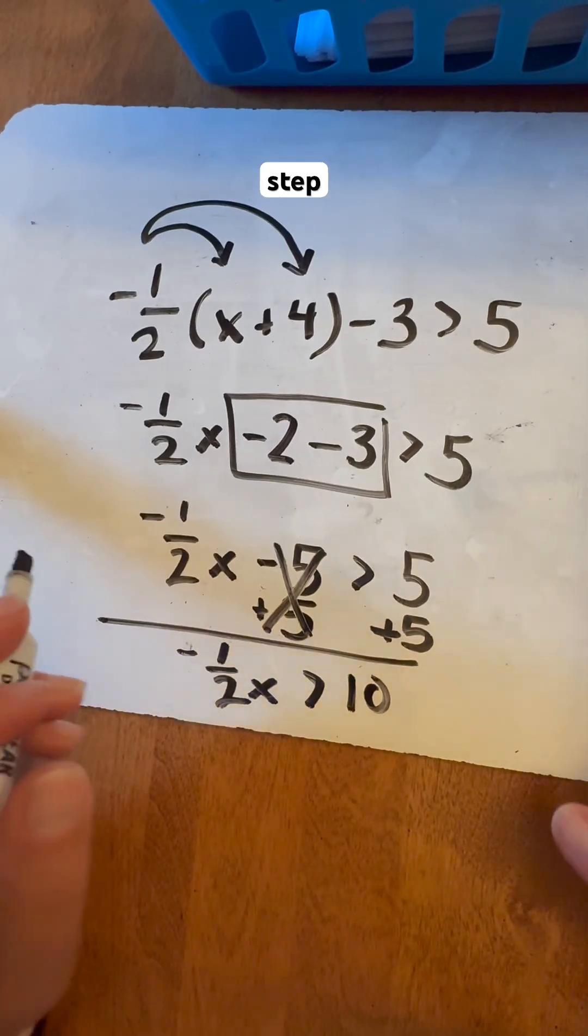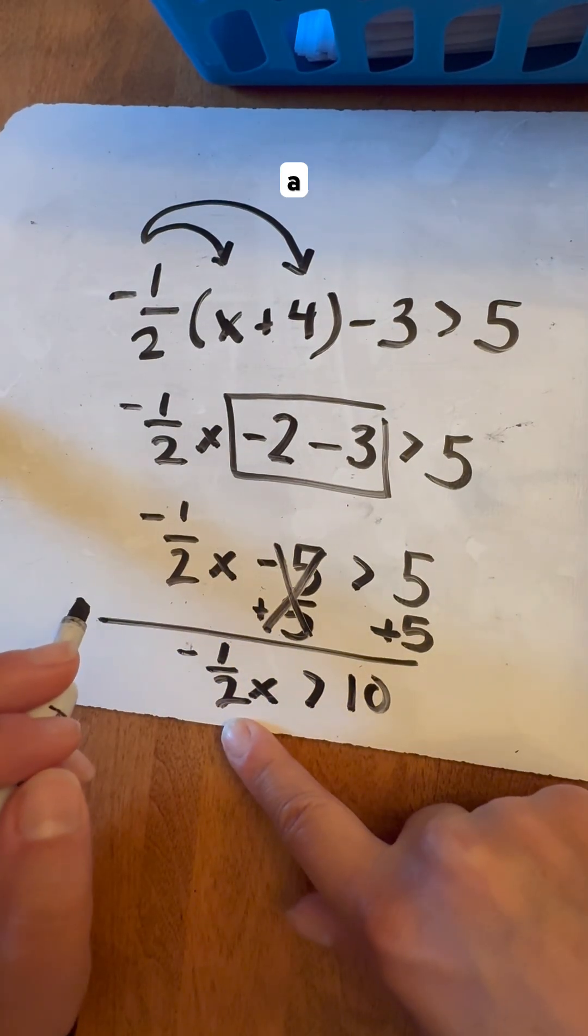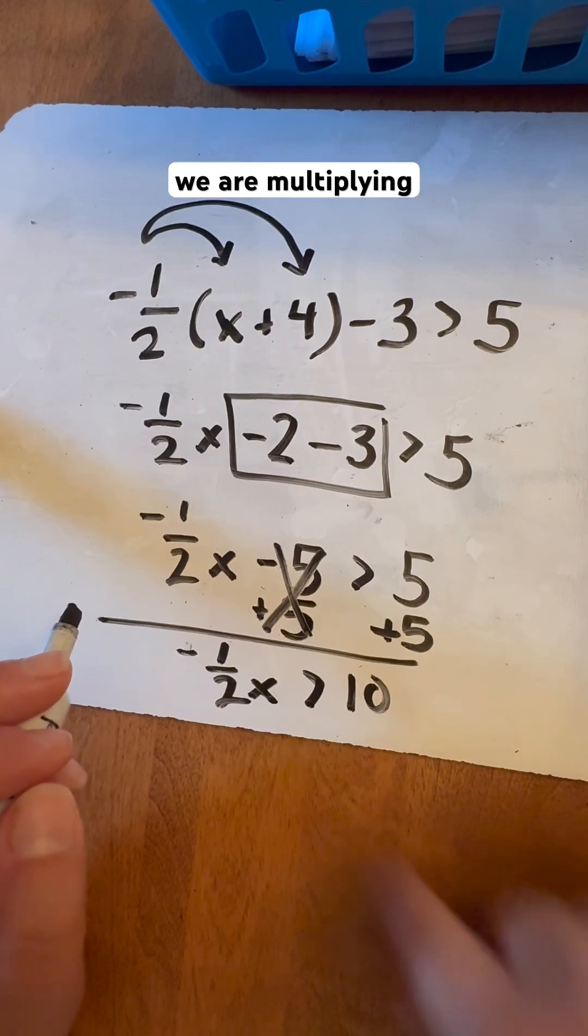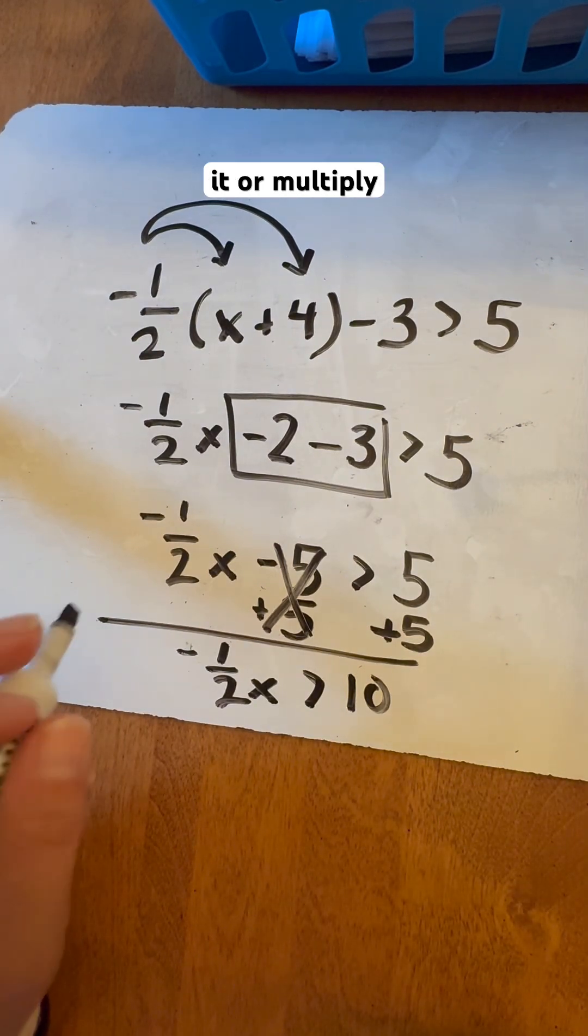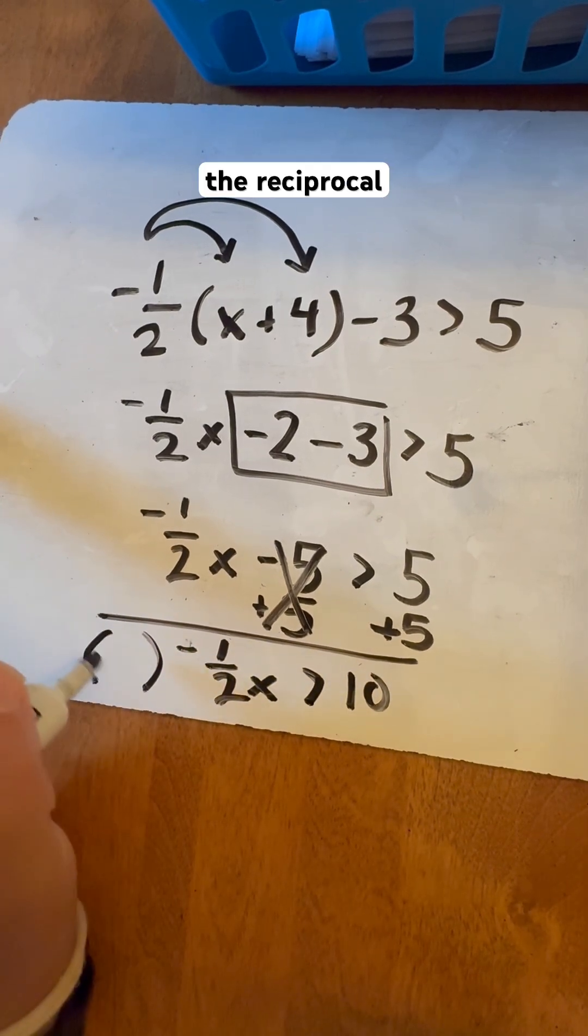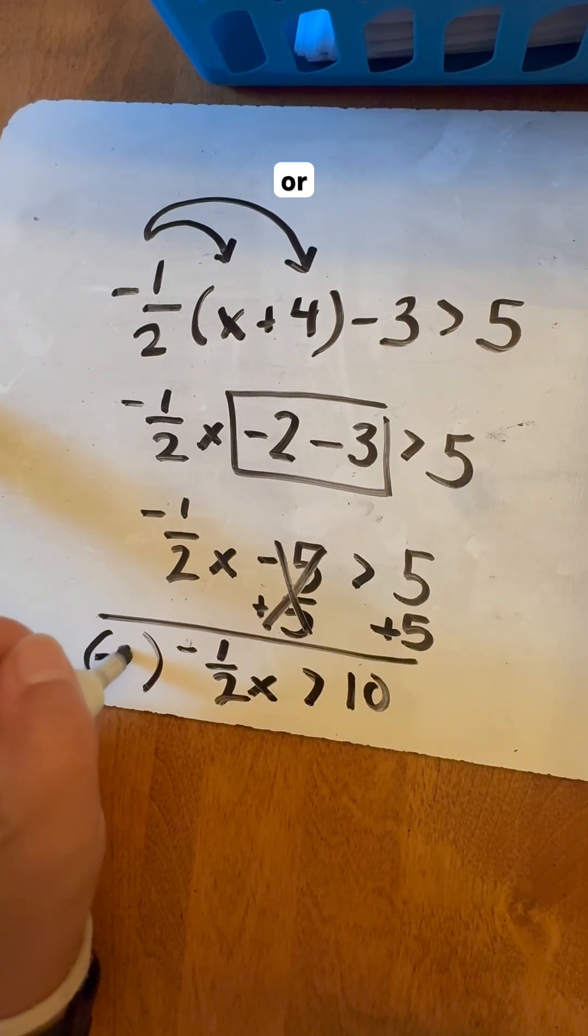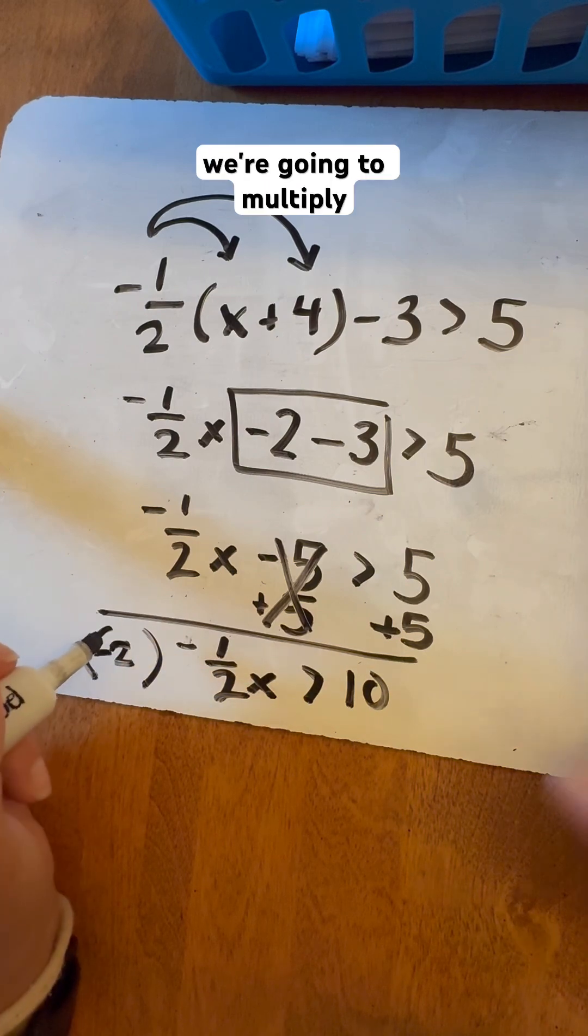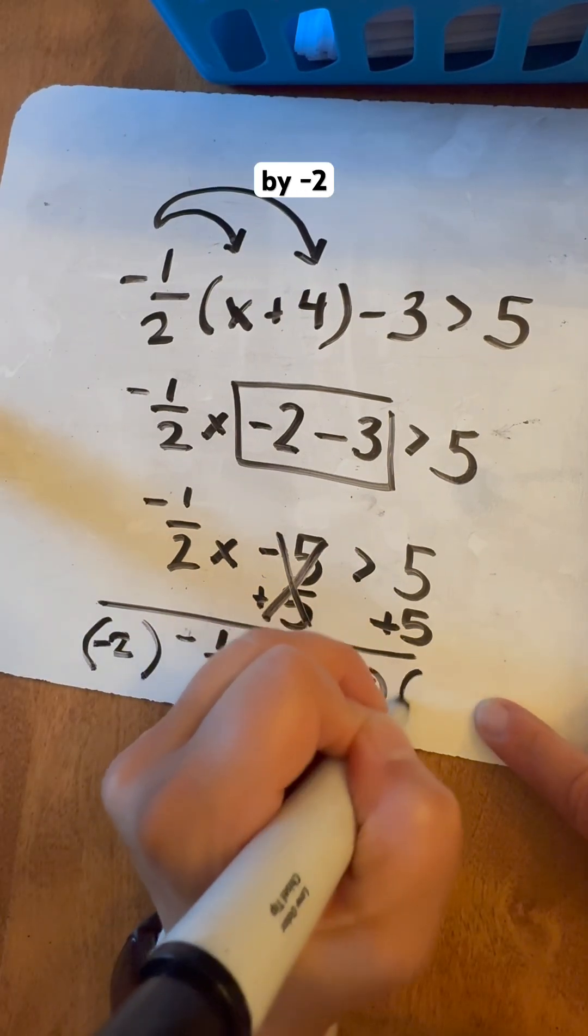Now with this step, we have a fraction in front of this, which means we are multiplying. So we're going to divide it or multiply it by its reciprocal. And because we're multiplying by a reciprocal, which is negative two or negative two over one, we're going to multiply it on this side also by negative two.